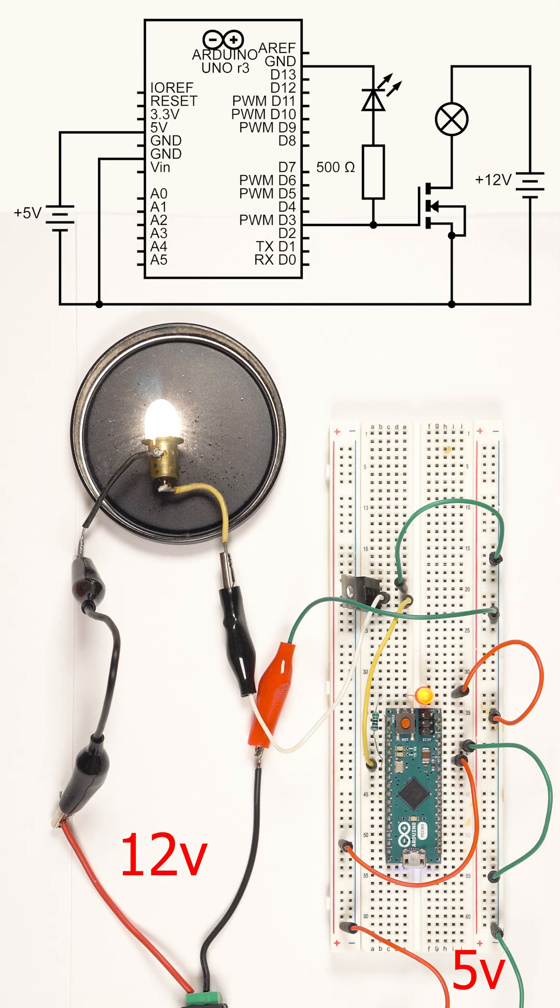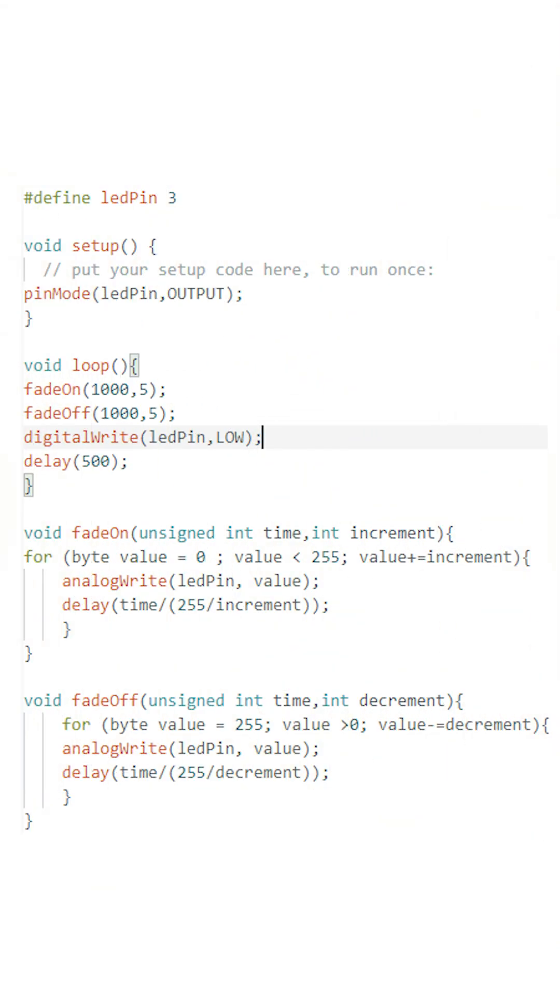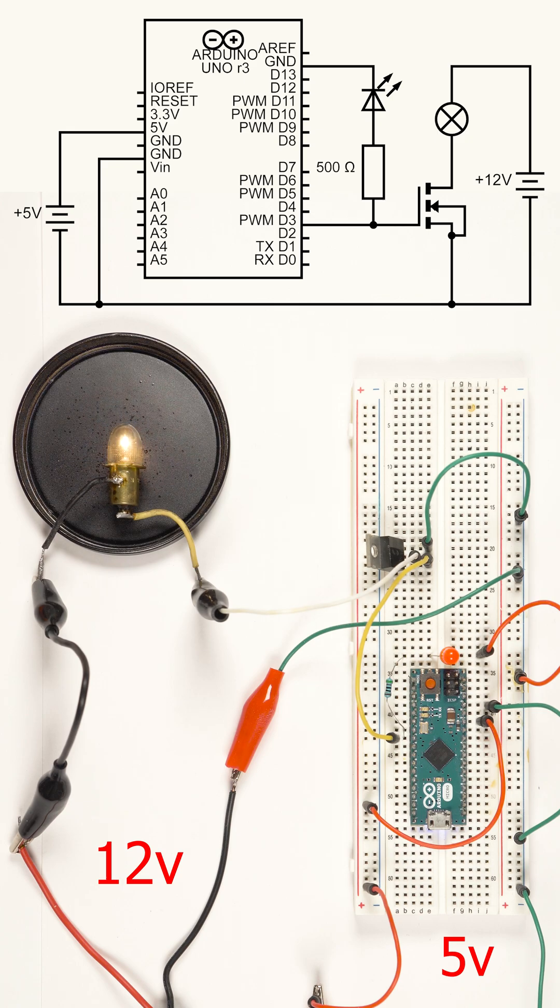Here the MOSFET will come to the rescue. And now we can even modify our sketch to work as a dimmer. As we can see, the lamp, being driven by the MOSFET, completely follows the LED.